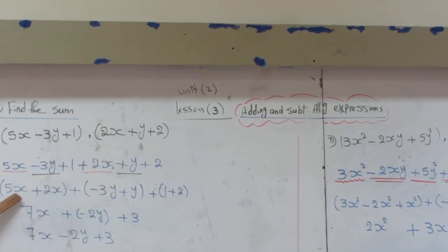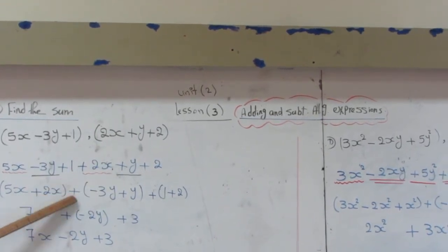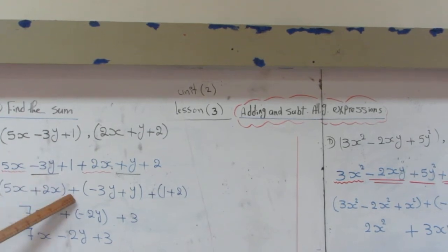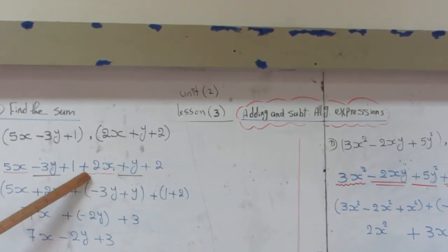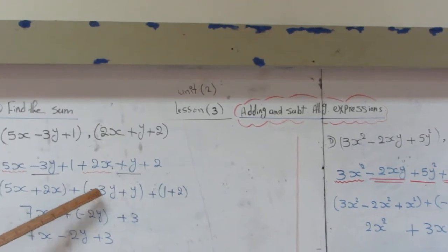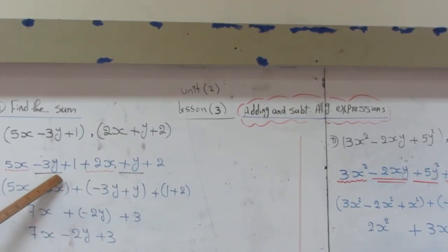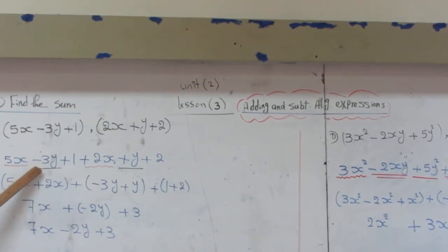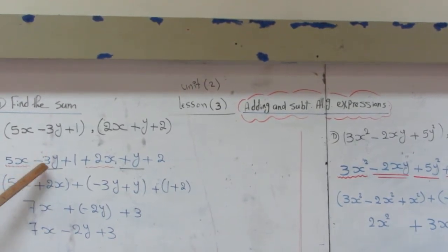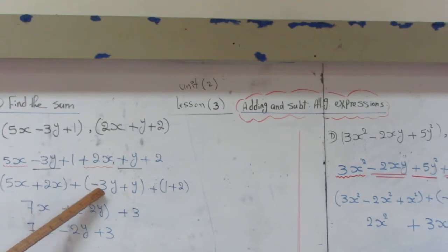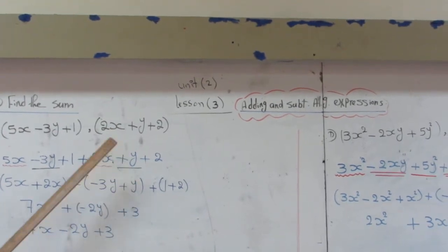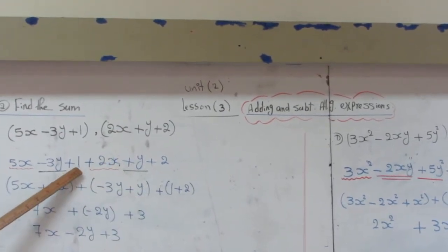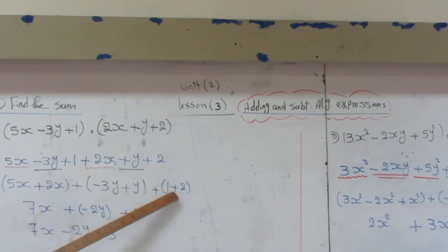The second step, my friend, is to collect the like terms together. I have here 5X and here 2X. Then I will write 5X plus 2X, close the brackets and make the addition which is plus. I will open the brackets. As usual, I will take negative 3Y. I have here negative, then the term will be taken by the sign before it which is negative. I will take negative 3Y plus Y. I have here 1, I will take 1 plus 2 in a bracket.